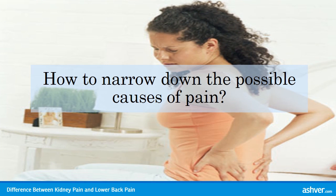How to narrow down the possible causes of pain. It is the characteristic of pain and a combination of symptoms, not a single symptom, from which one can suspect the cause of lower back pain. Pain can be sudden or slowly developing, constant or occasional, sharp, throbbing, cramping, dull, or affected by body position.